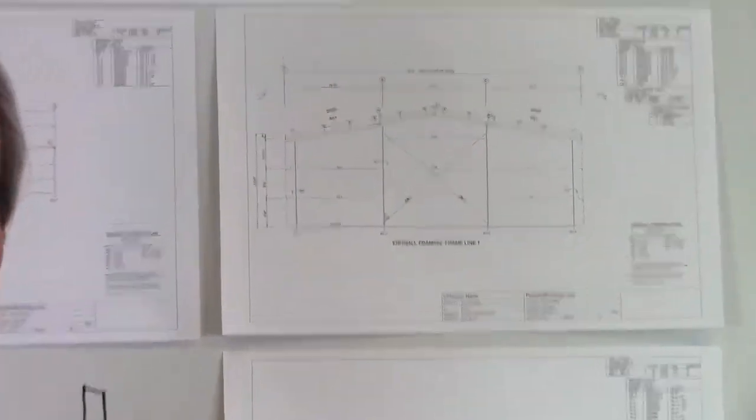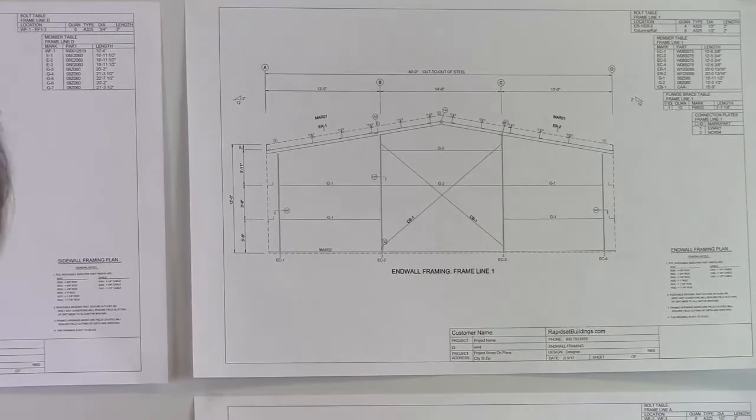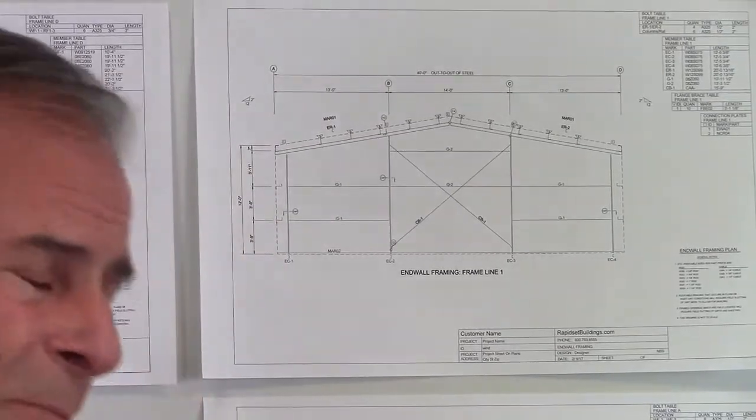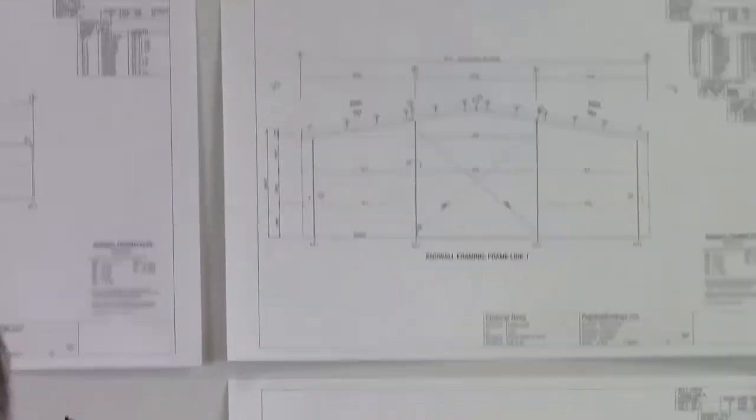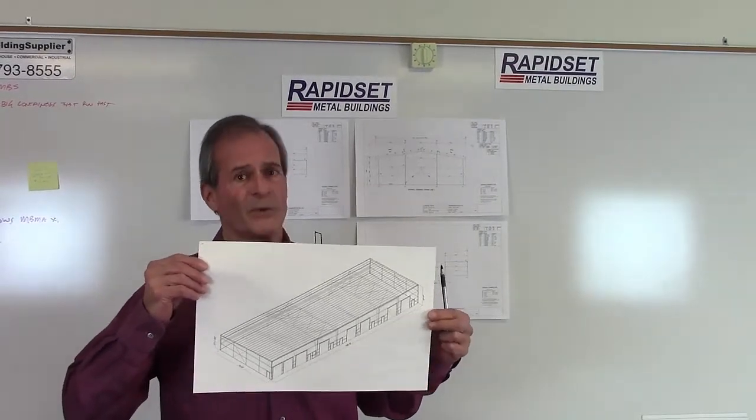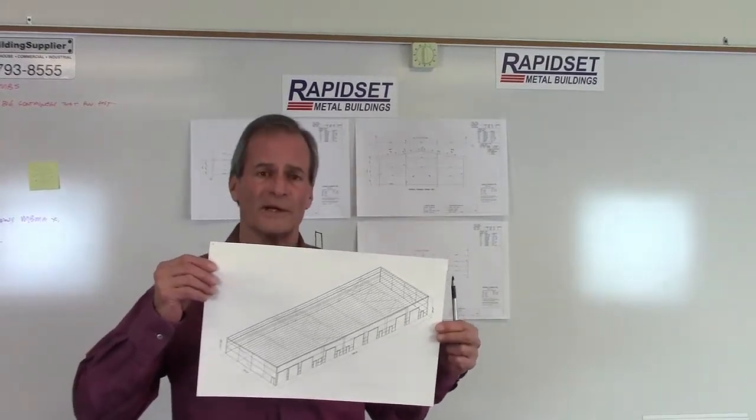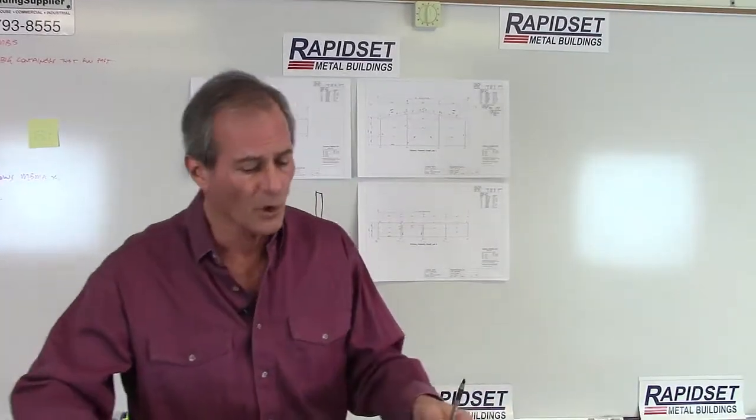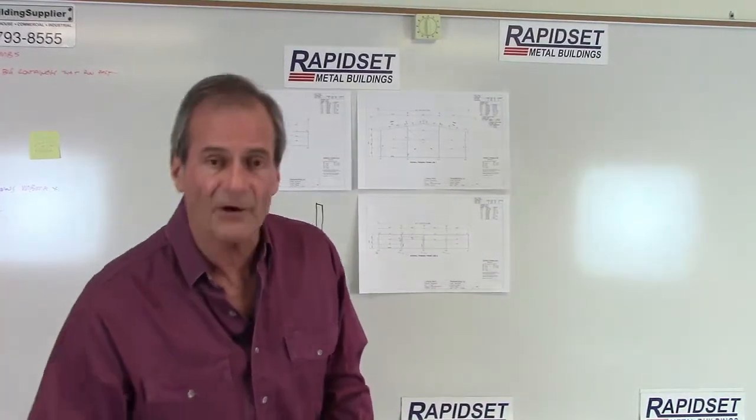Cable is the nicest, the cheapest, easiest way in the world to go. But what happens when a customer has a requirement for framed openings in every bay? Now we have no room for any of our conventional or cross bracing types.